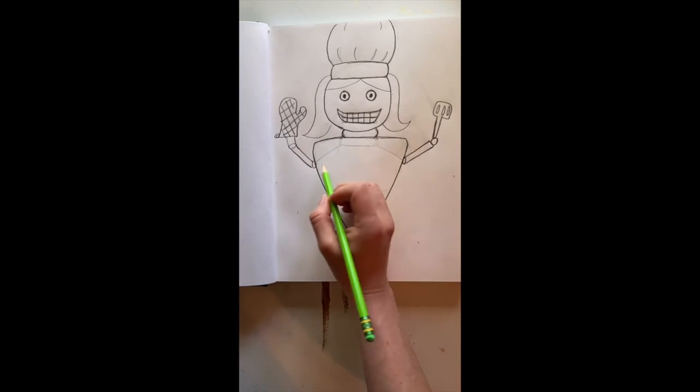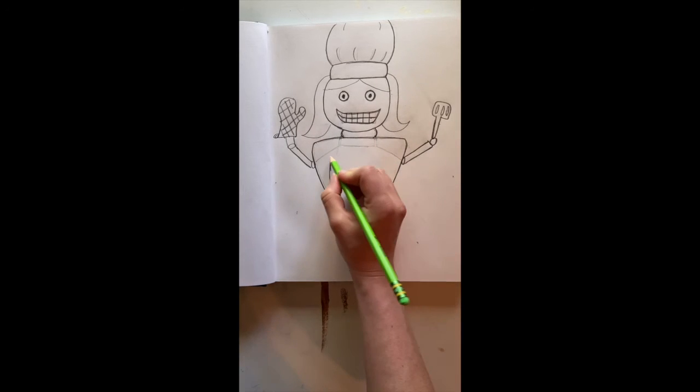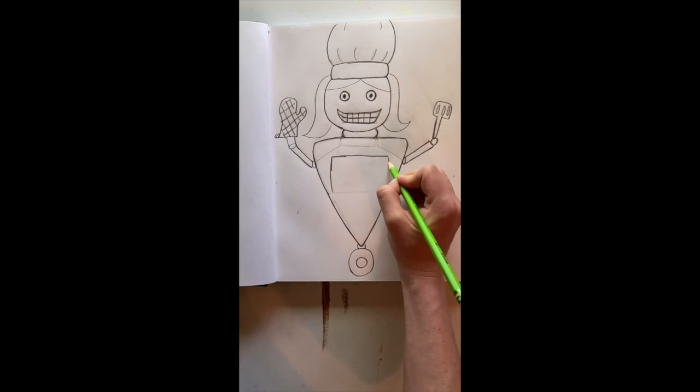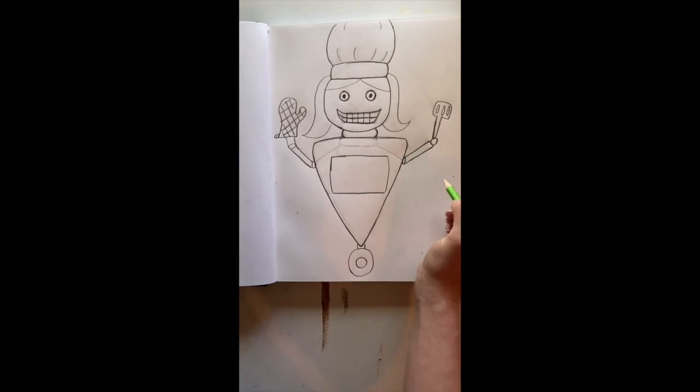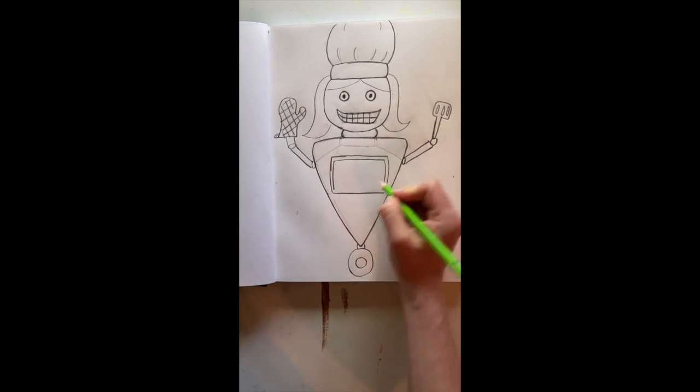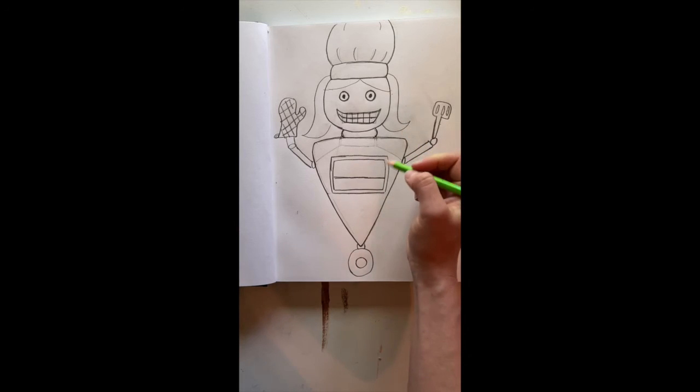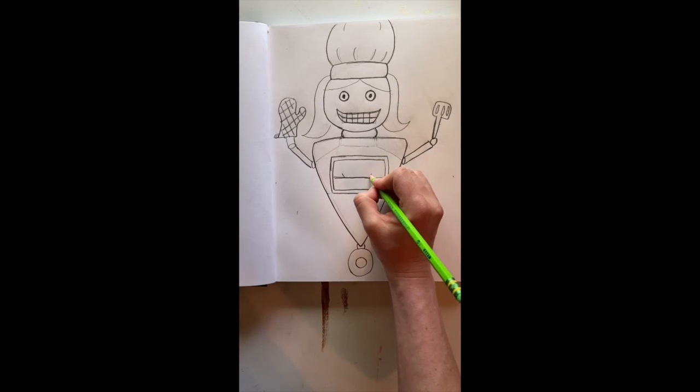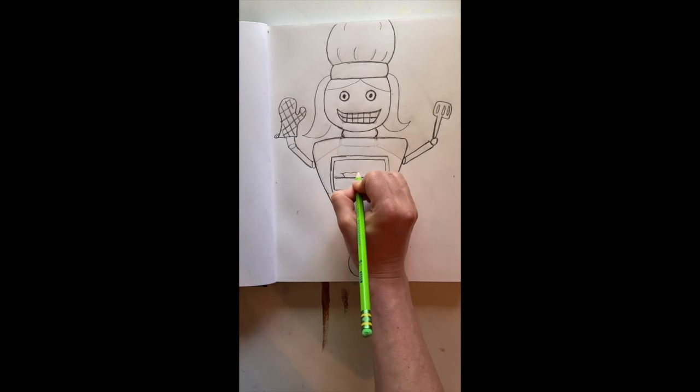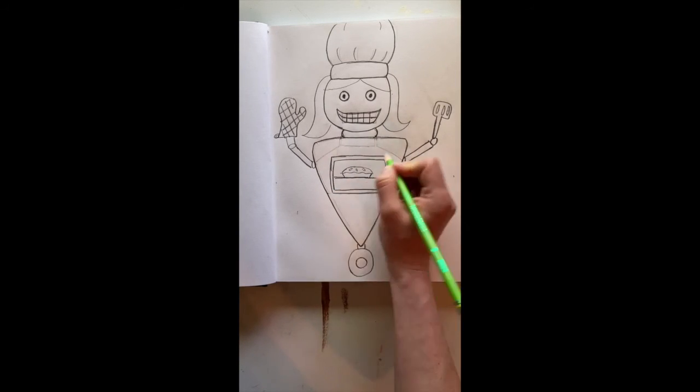So I'm going to start in the center of her body and create a basic rectangle to begin. It doesn't have to be perfect. I'm just trying my best and I can always go back and clean it up and change my lines. Now I'm even going to put a little line in here to show where something would sit if it was cooking. And so people understand further what she's doing, I'm also going to make a little pie inside so that you can tell she is baking a sweet treat.